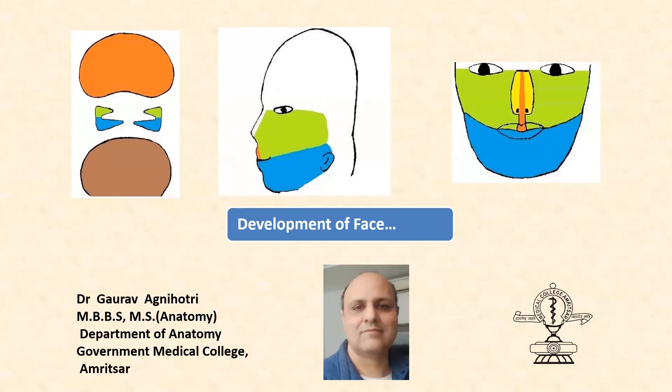The human face develops between the 4th to 6th week of intrauterine life. Between the 6th to 8th week, the palate begins to develop, thereby separating the oral and nasal cavities, and this development is completed by the 12th week of intrauterine life.